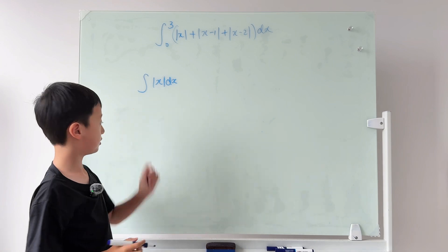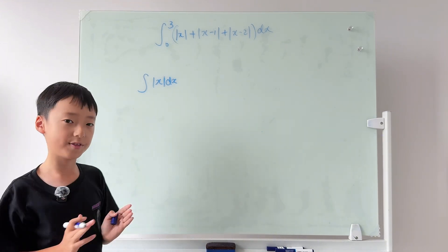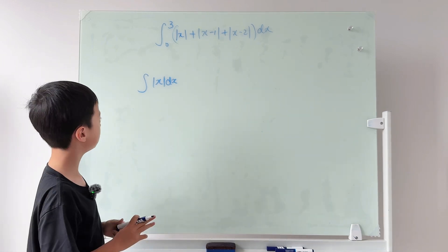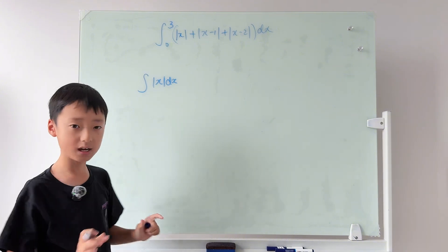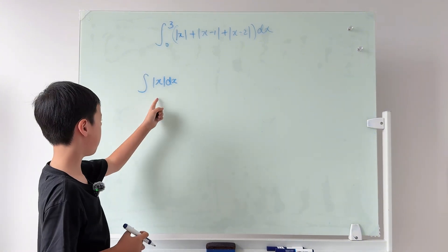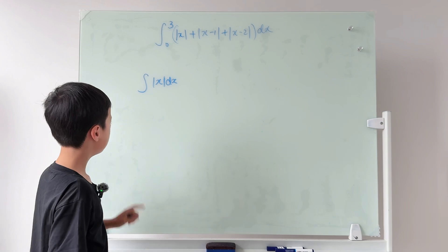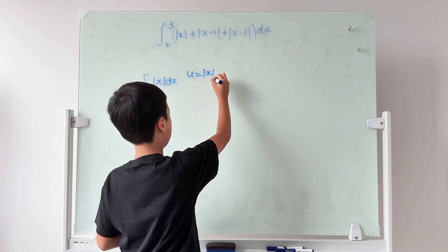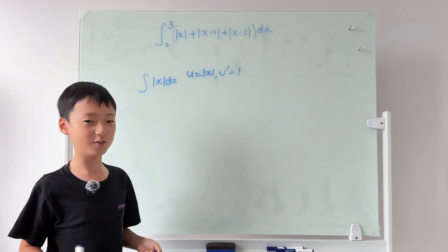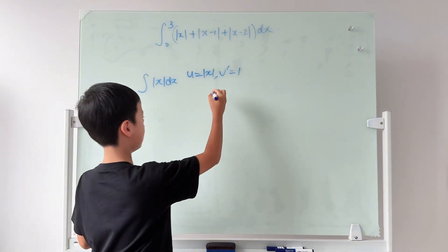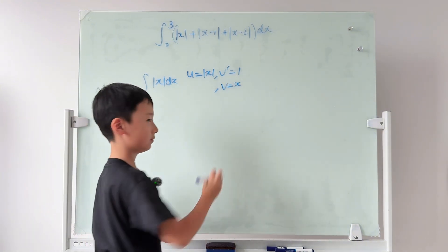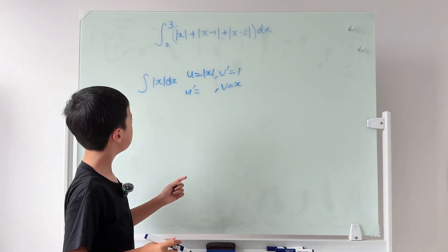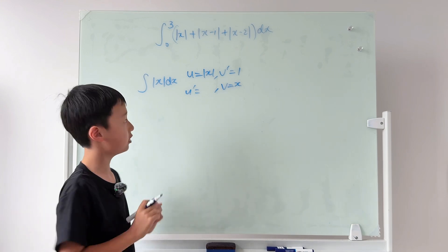To integrate absolute value of x, let's think about which method to use. U-substitution probably won't work, but integration by parts will. We let u equal absolute value of x and v' equal one, so v is x and u' is the derivative of absolute value of x — which we don't know yet.